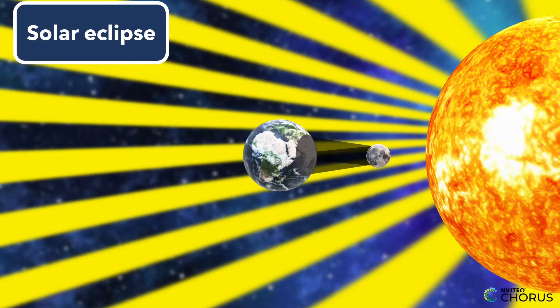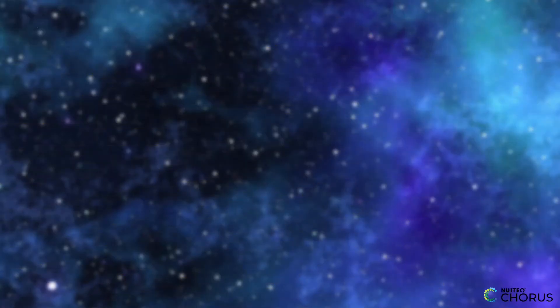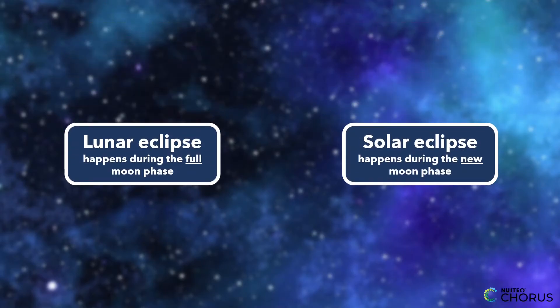This happens because the Sun, Earth, and Moon all line up in a straight line. These events are rare, and can only happen during full Moon and new Moon phase, respectively.